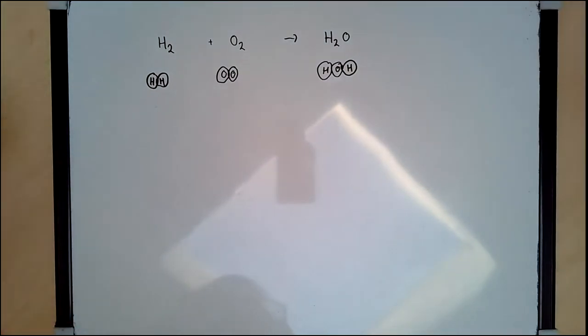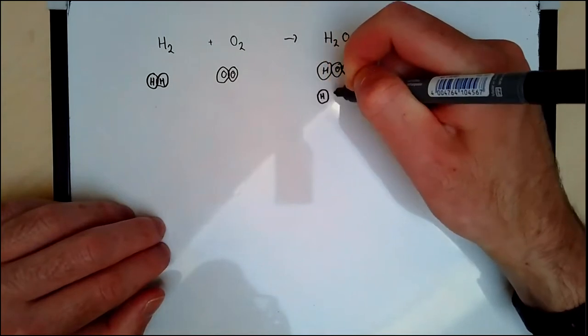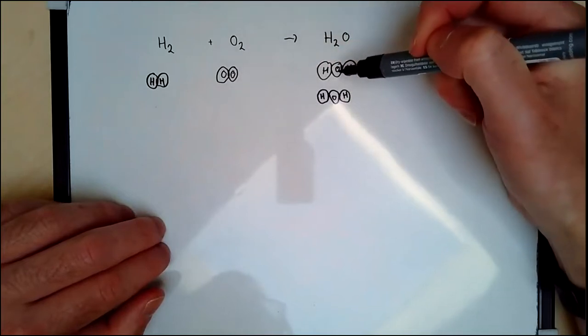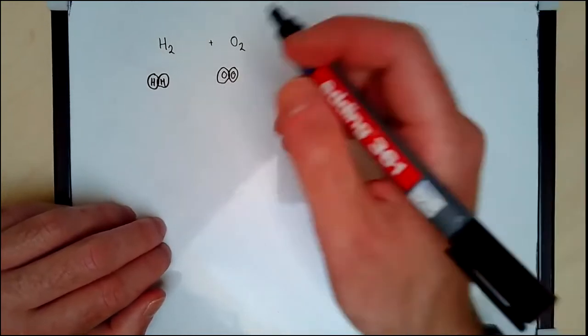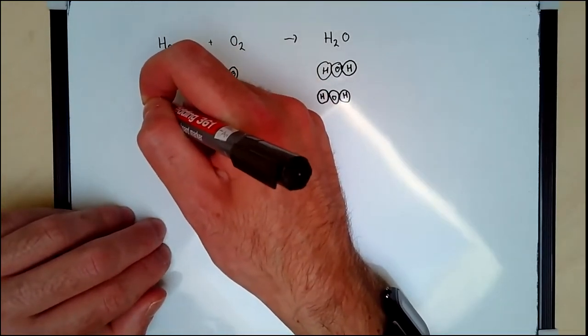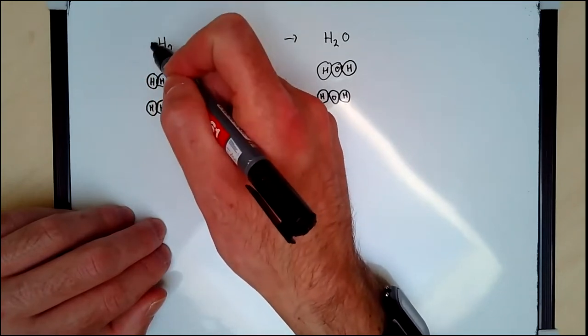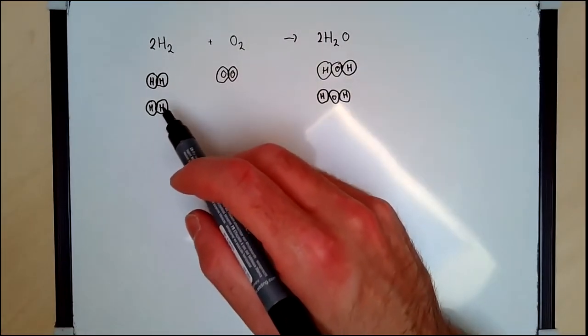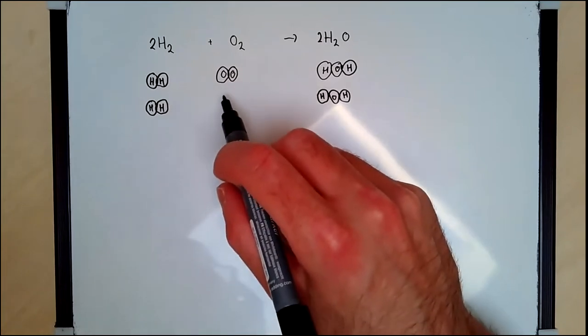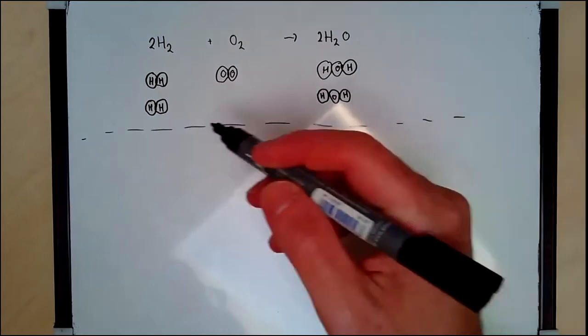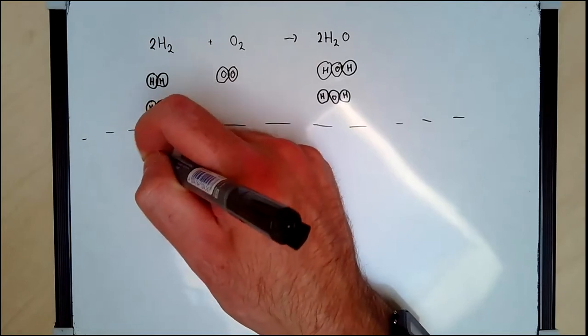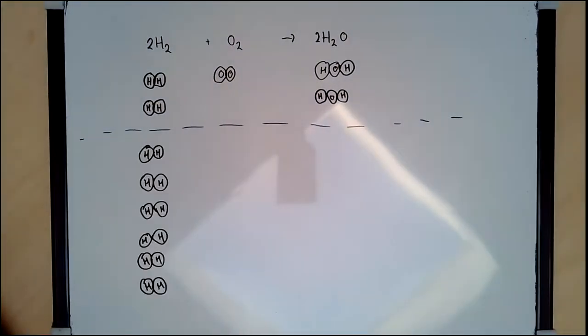And we saw that this is definitely not balanced because we need another one here in order to make the oxygens match up. So I had two oxygens here, I need two oxygens there. Now I've got one, two, three, four hydrogens here and only two over there. So I definitely need to add some more hydrogen over here to get them to match up.